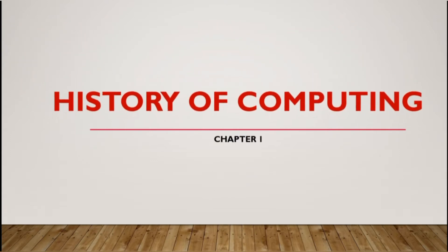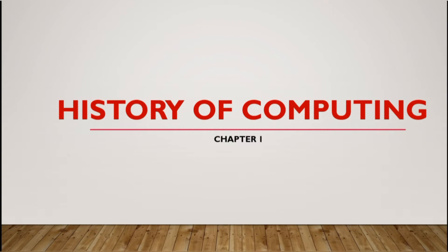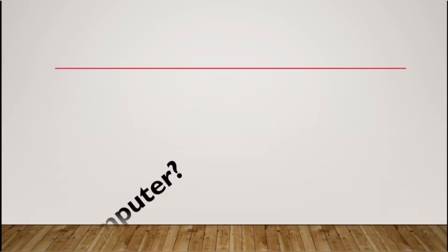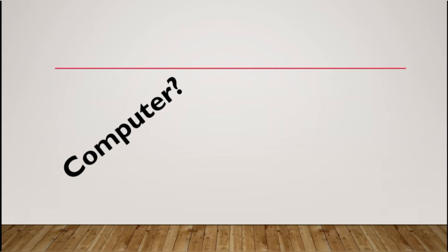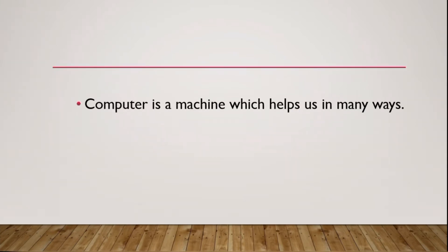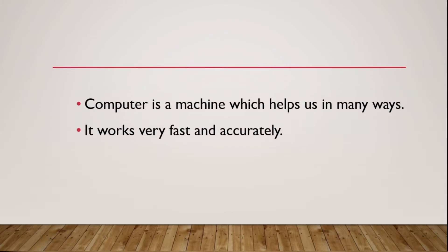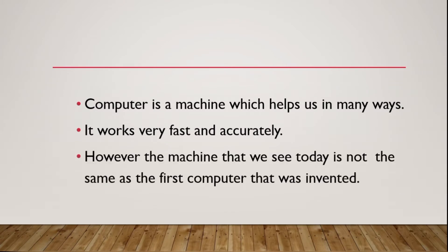Hi students, I'm Dishna, your computer science teacher. In this section we are discussing the history of computing. But before that, let's discuss what the word 'computer' means. The word 'computer' comes from the word 'compute', which means to calculate something. A computer is a machine which helps us in many ways — it works very fast and accurately.